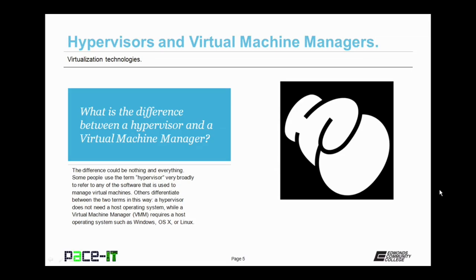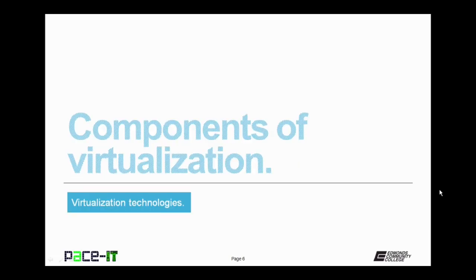Others will differentiate between the two terms in this way: a hypervisor does not need a host operating system, while a virtual machine manager, or VMM, requires a host operating system such as Microsoft Windows, Apple OS X, or a Linux operating system — while the hypervisor can operate as its own operating system.